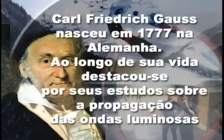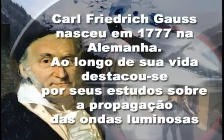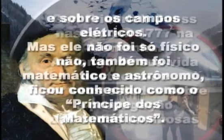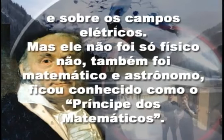Karl Friedrich Gauss nasceu em 1777 na Alemanha. Ao longo de sua vida, destacou-se por seus estudos sobre a propagação das ondas luminosas e sobre os campos elétricos. Mas ele não foi só físico, também foi matemático e astrônomo. Ficou conhecido como o príncipe dos matemáticos.